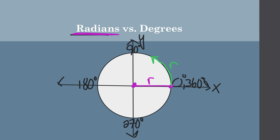If I do another one, it goes about here — there's another radius. And if we go another one, it goes to about right here — another radius. So we have one, two, and three radii, or radiuses. And then a little bit more — that little bit more happens to be 0.14. So it's actually 3 and 0.14, which we know is actually pi, which never stops.